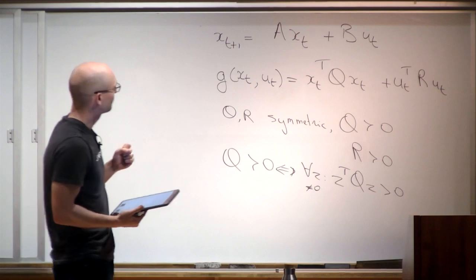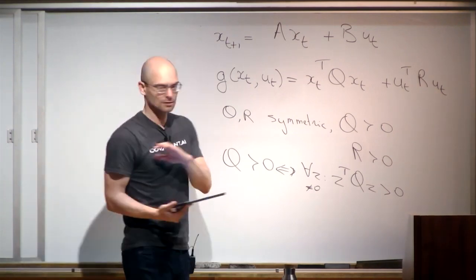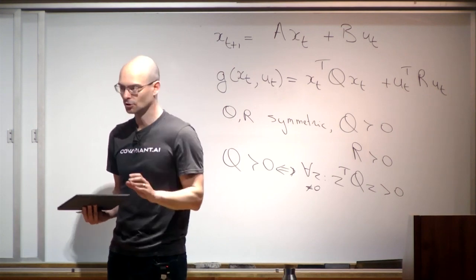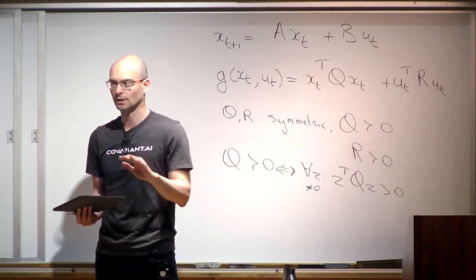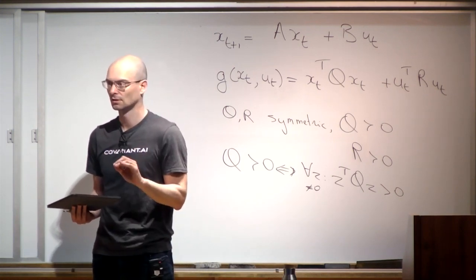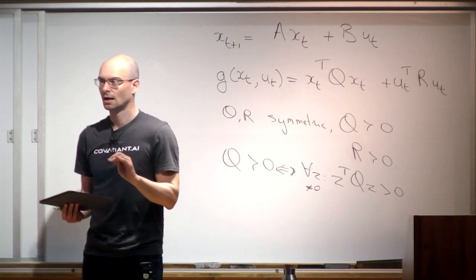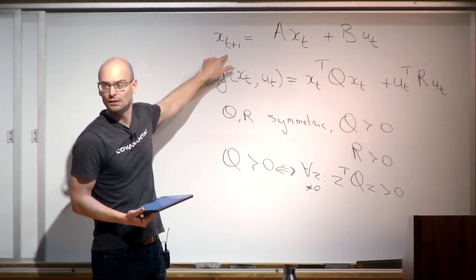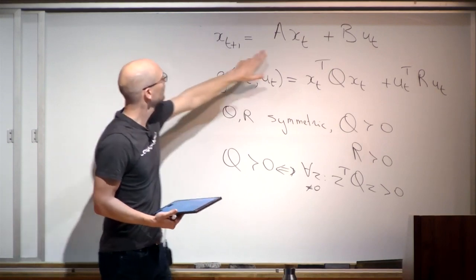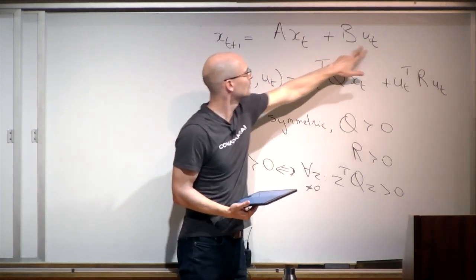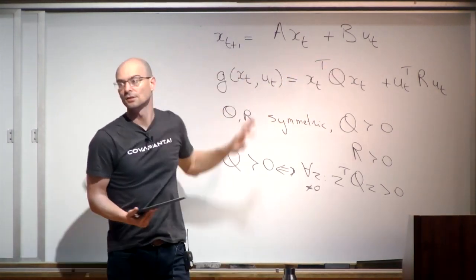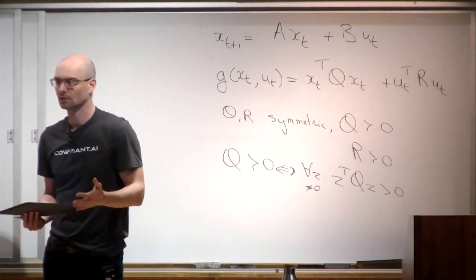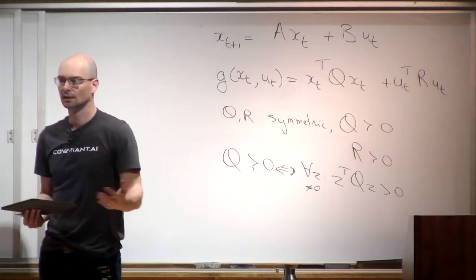What this means is that the cost is non-zero everywhere except when you're at the zero state. If you have zero state and zero controls, cost is zero — that's the best place to be. Everything else is worse. We can also see the system is set up so this is achievable: if state is zero and control is zero, you'll be at zero again. So the optimal solution will drive you to zero and stay there.